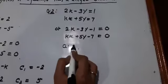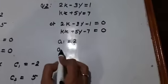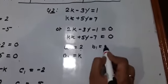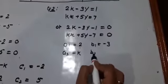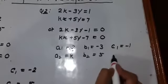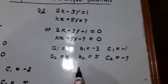a1 equal 2, a2 equal k, b1 equal minus 3, b2 equal plus 5, c1 equal minus 1, c2 equal minus 7.